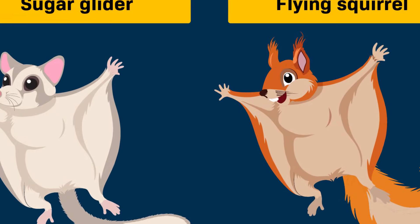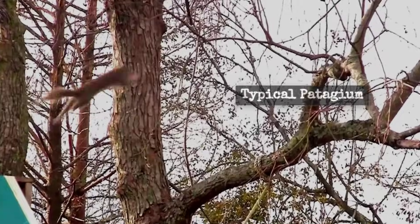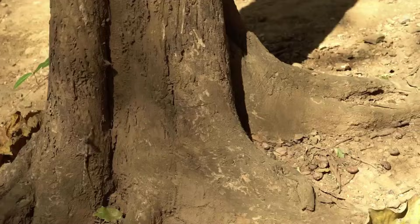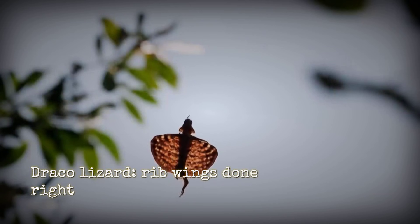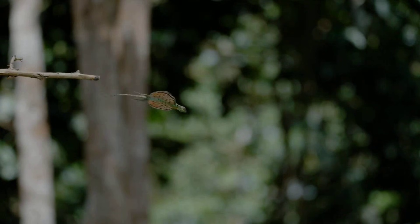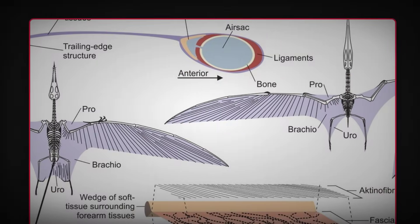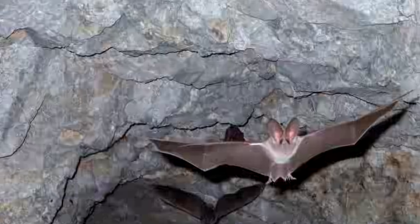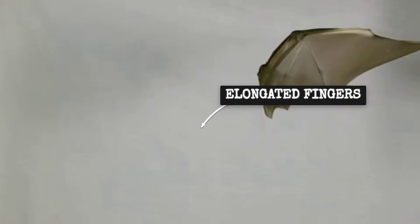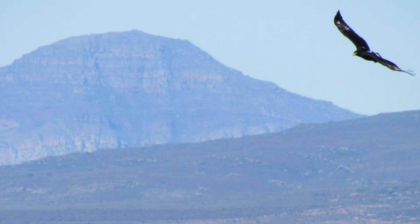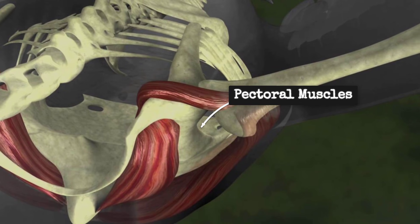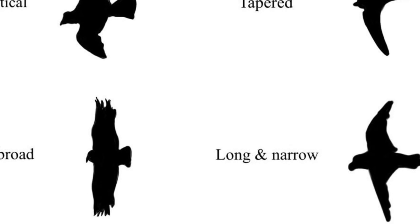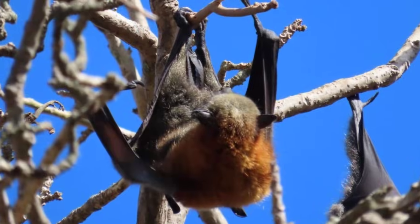Let's compare Sharovipteryx to every other gliding animal that ever existed. Flying squirrels: membranes stretch from wrist to ankle, four limbs working together, balanced, maneuverable. Flying lizards called Draco: ribs extend outward to support membranes, wings deploy from the torso, compact, efficient. Pterosaurs: wings supported by a single elongated finger, massive flight muscles anchored to the chest, built for power. Bats: wings stretching from elongated fingers controlled by wrist joints, precise, agile. Birds: feathers attached to arm bones, flapping powered by pectoral muscles, the most successful flying design ever evolved. All of them follow the same rule: wings on the arms, power from the chest, legs free for landing.